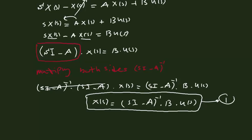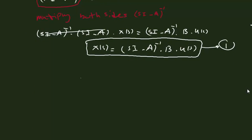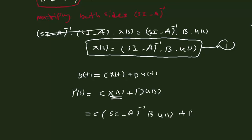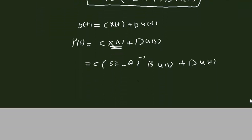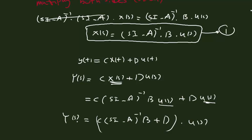Now we take the Laplace transform of the output equation Y(t) = C·X(t) plus D·U(t), giving Y(s) = C·X(s) plus D·U(s). Substituting X(s) from equation one: Y(s) = C·(sI minus A)^(-1)·B·U(s) plus D·U(s). Factoring out U(s): Y(s) = [C·(sI minus A)^(-1)·B plus D]·U(s).